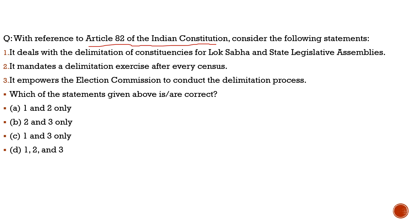Southern states approached the government, and in 1976 the 42nd Constitutional Amendment was brought in. Under that Amendment, the delimitation was paused for 25 years. The freeze was based on the 1971 census. Then in 2001, another delimitation was conducted but the underlying issue remained the same.